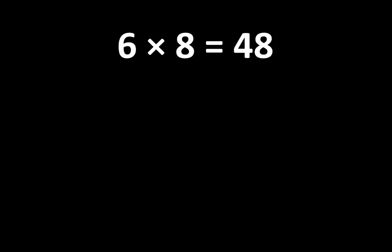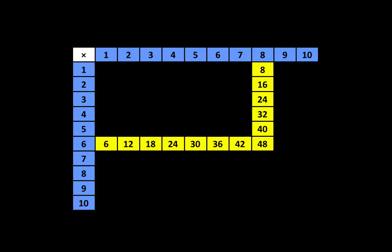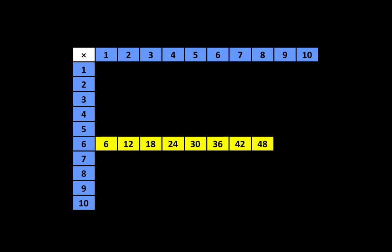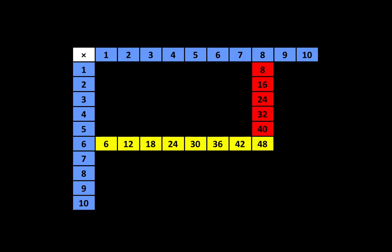6 times 8 is equal to 48, and there are many more important ideas. When we look on the multiplication table, we can see that 6 times 8 is equal to 48. 48 is a multiple of 6, and 48 is also a multiple of 8. In fact, 48 is the 8th multiple of 6, and 48 is also the 6th multiple of 8. Understanding that 48 is a multiple of both 6 and 8 is very important.